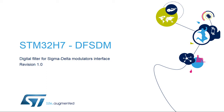Hello, and welcome to this presentation of the STM32 Digital Filter for Sigma Delta Modulators Interface. It covers the features of this interface, which behaves like an analog-to-digital converter, or ADC, with an external analog part and configurable speed-versus-resolution ratio.